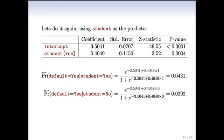Okay, let's do it again using the variable student as a predictor. This is a binary variable. Is the credit card holder a student or not? And we find we get a coefficient of 0.4049 in this case, which is also significant. So this is another variable in our database.